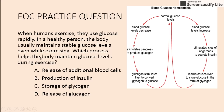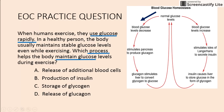Practice question one: when humans exercise, they use glucose rapidly — so glucose is decreasing. In a healthy person, the body usually maintains stable glucose levels even while exercising. Which process helps the body maintain glucose levels during exercise? We have keywords, and we're given a diagram. Since we're using glucose, glucose levels are going to decrease, so we look at that side of the diagram.